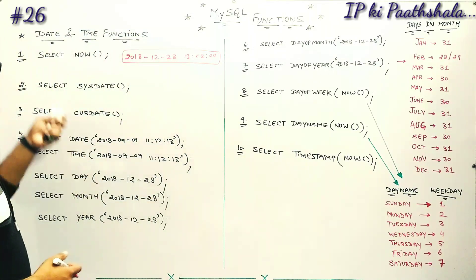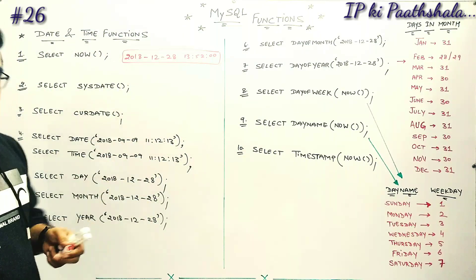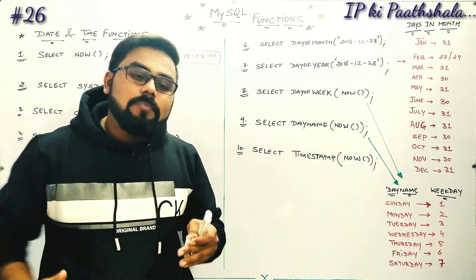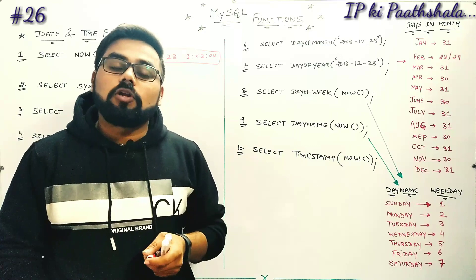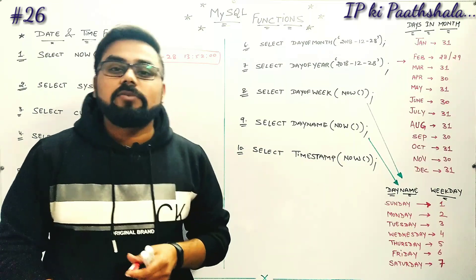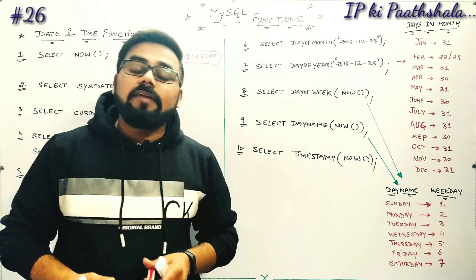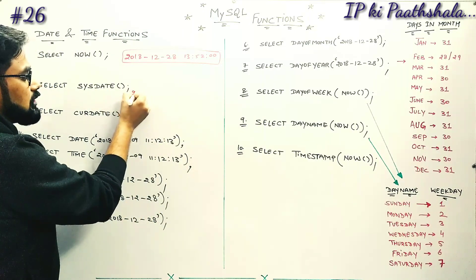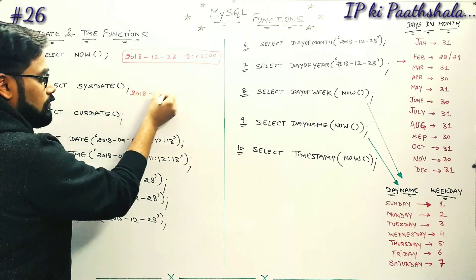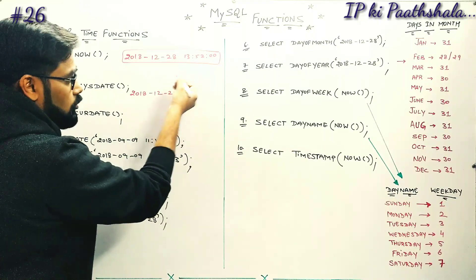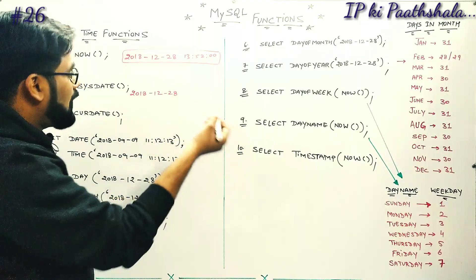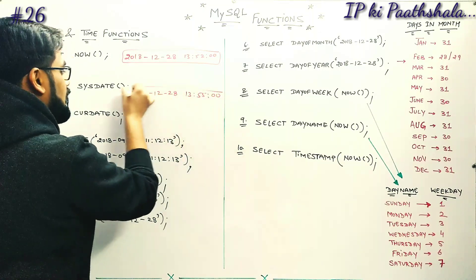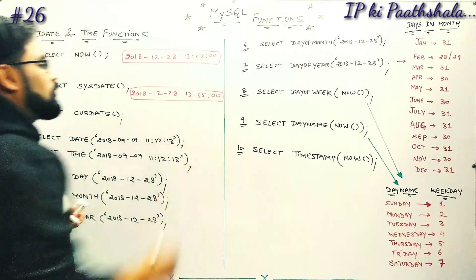Our next function is SELECT SYSDATE(). SysDate is the short abbreviation used for system date. When you configure your Windows system and install your system, you set your date and time — those fixed values are what SysDate returns. The answer is nearly the same format as NOW(), for example showing 13:55:00, and it gives both date and time parts.